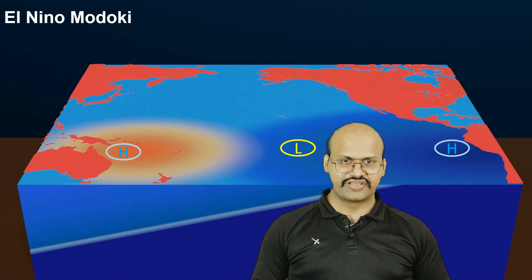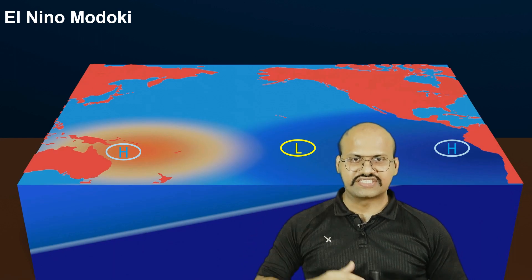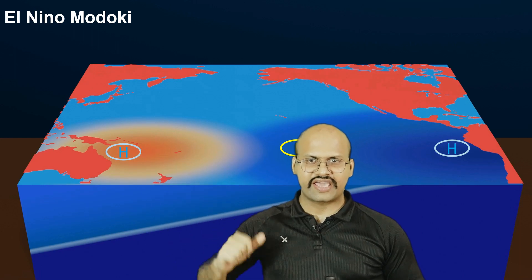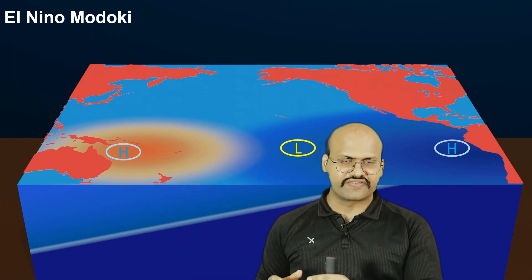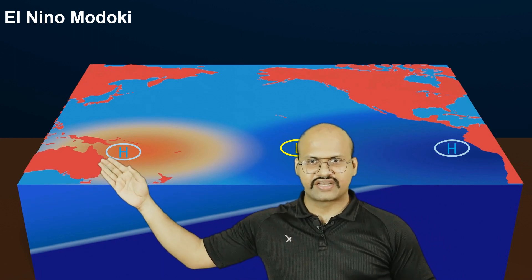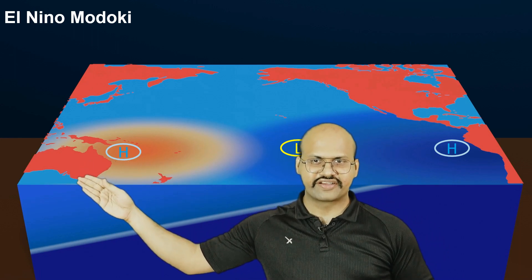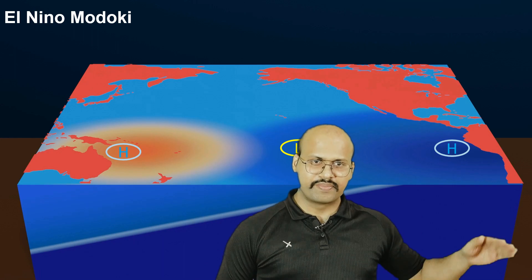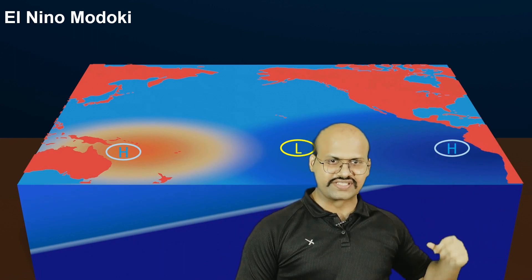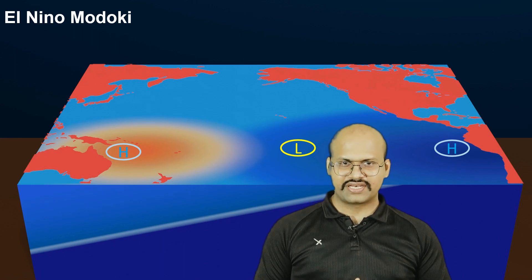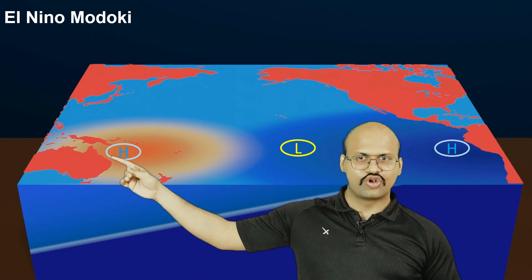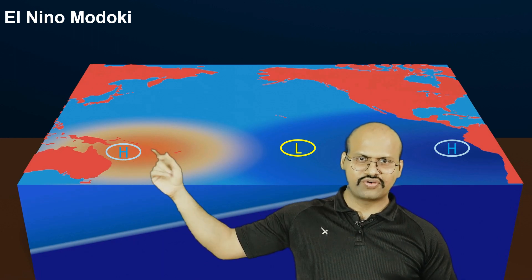With the start of El Niño Modoki, a low pressure region forms in the middle of the Pacific Ocean and the low pressure region over Australia is converted into a high pressure region. This is different from normal El Niño, where the low pressure over Australia becomes high pressure and the high pressure over South America becomes low pressure. In El Niño Modoki, a low pressure forms in the middle, and the low pressure over Australia converts to high pressure, but South America does not change in the same way.